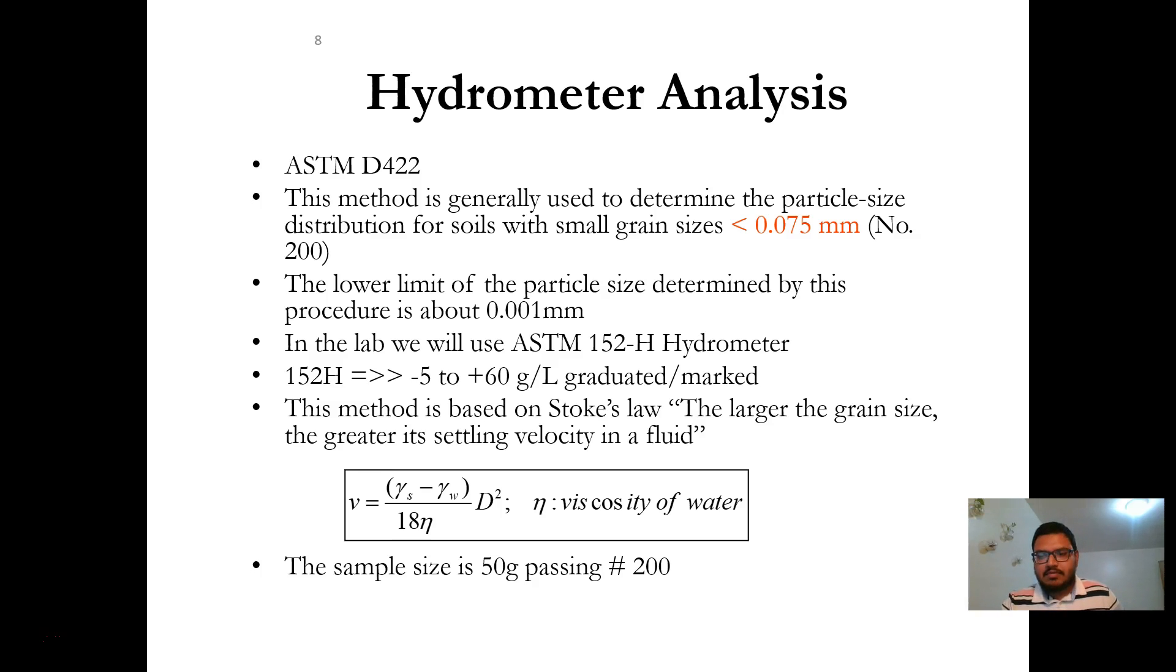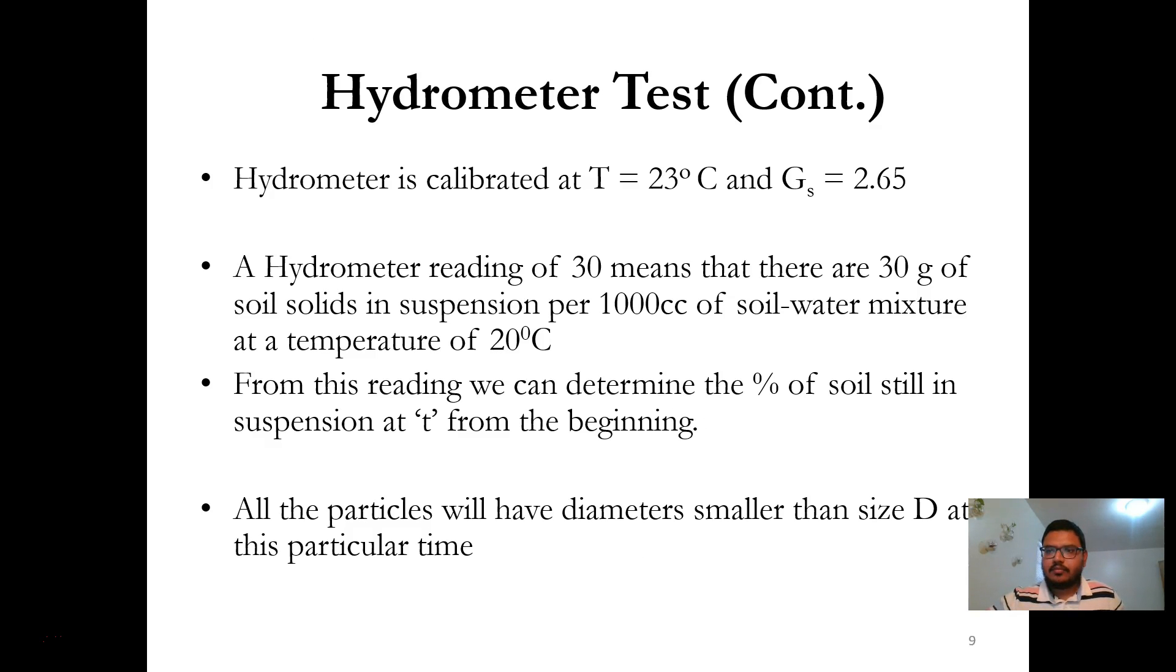We will take 50 grams of soil sample passing number 200 sieve. A hydrometer reading of 30 means that there are 30 grams of soil solids in suspension per 1000 cc of soil-water mixture at a temperature of 20 degrees Celsius.